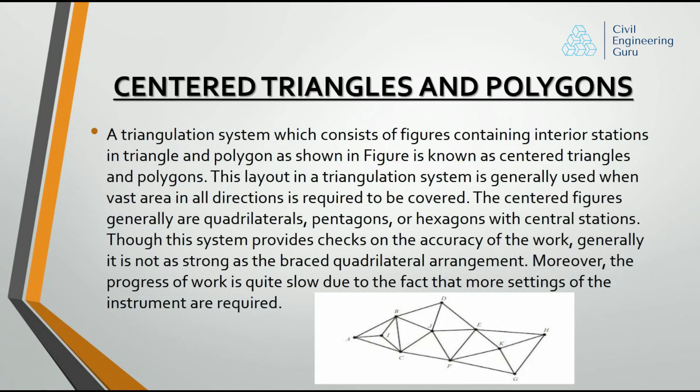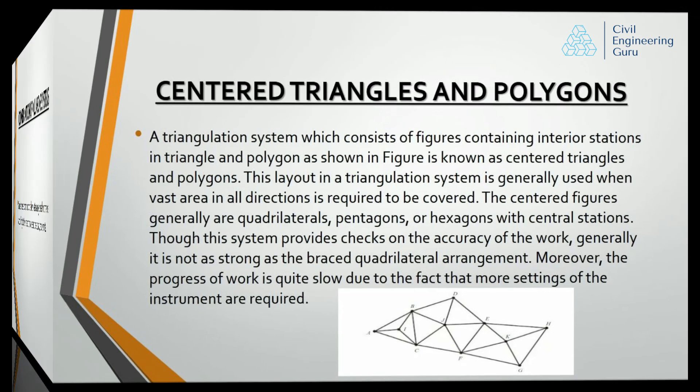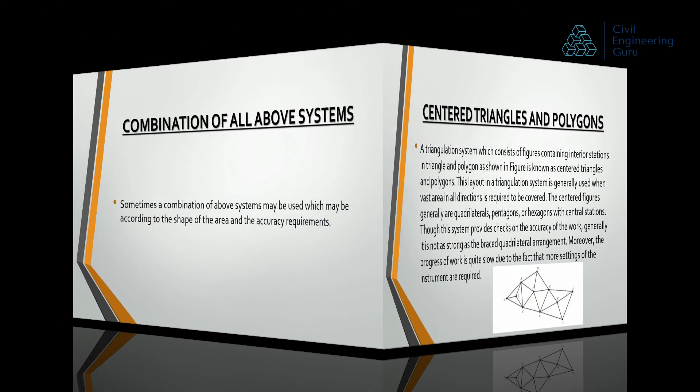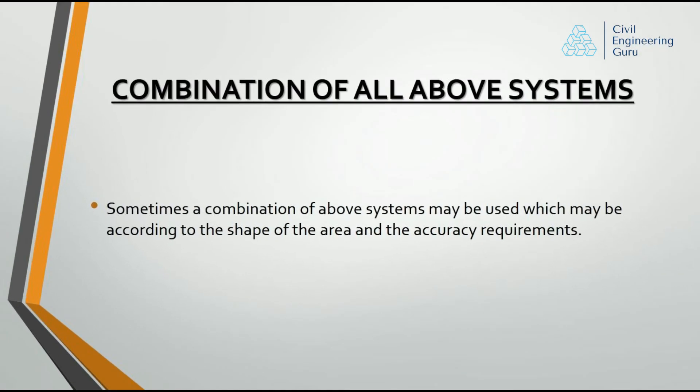Though this system provides checks on the accuracy of the work, it is generally not as strong as the braced quadrilateral arrangement. Moreover, progress of work is quite slow due to the fact that more settings of the instrument are required. Sometimes a combination of all the above systems may be used, according to the shape of the area and the accuracy requirements.